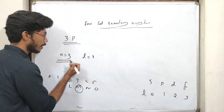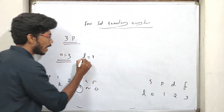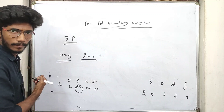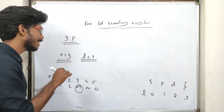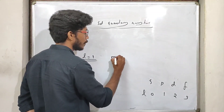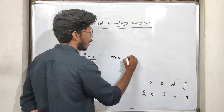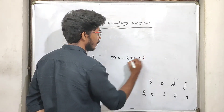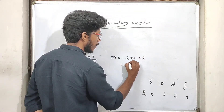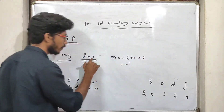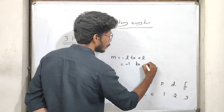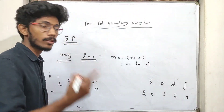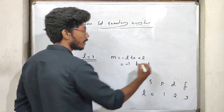The principal quantum number value is 3. The azimuthal quantum number value is 1. For the magnetic quantum number, the value will be minus L to plus L — which means minus 1 to plus 1.